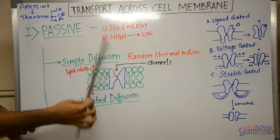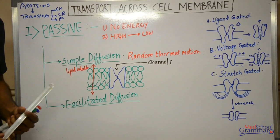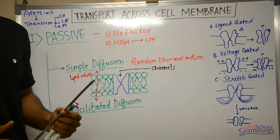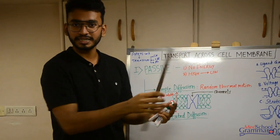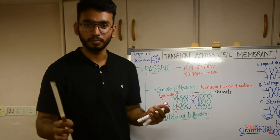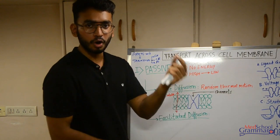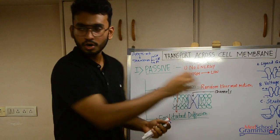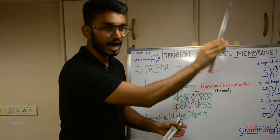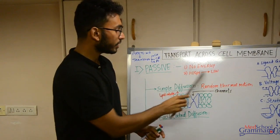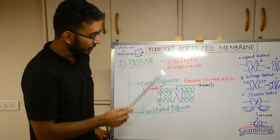Let's talk about simple diffusion first. Simple diffusion is due to random thermal motion of particles. The example we've seen since school: if we open a bottle of fragrance in a corner of a room, the fragrance spreads and can be smelled throughout the room. No energy was required, but the particles moved from the bottle to the other corner of the room — from an area of higher concentration to an area of lower concentration without the use of energy. That defines passive movement.